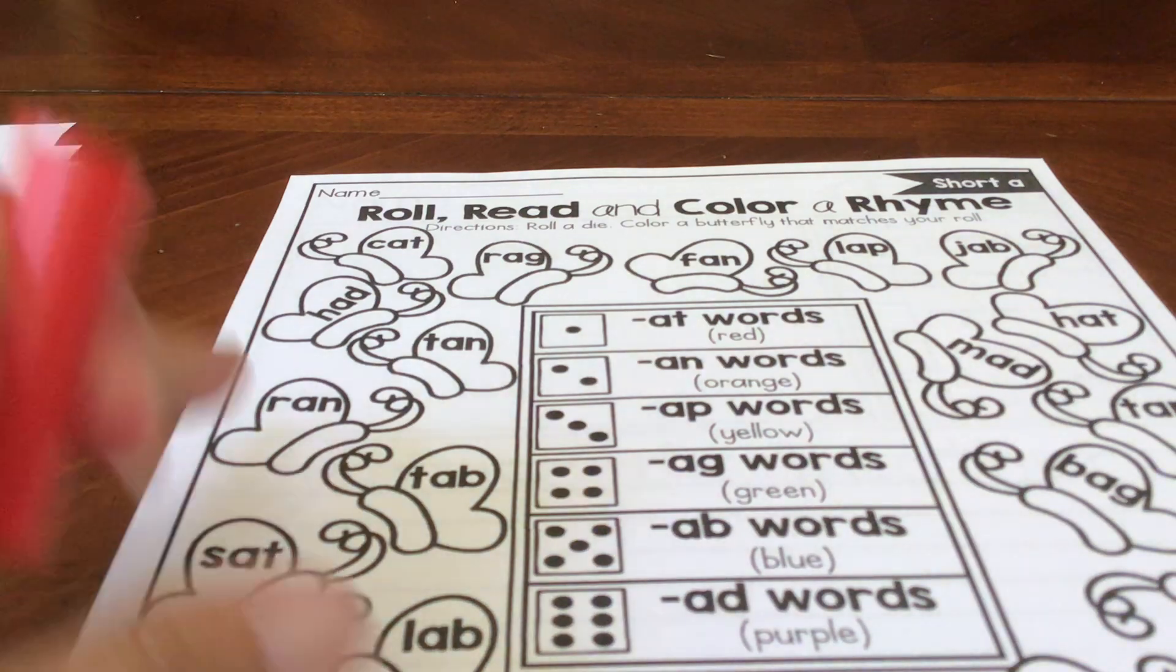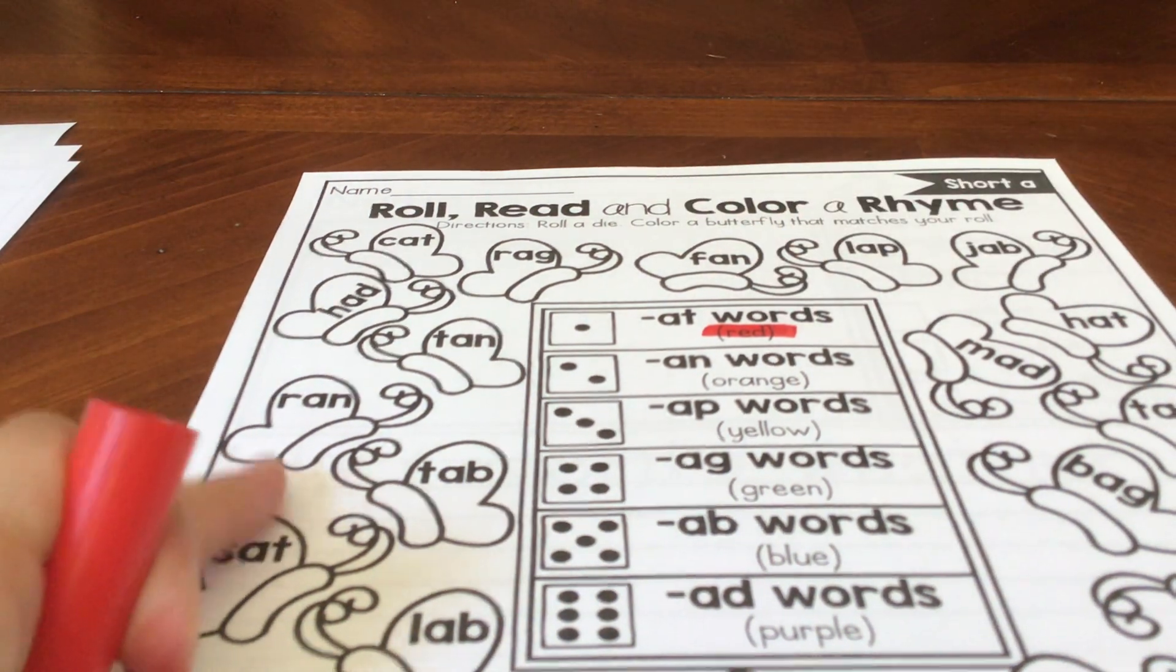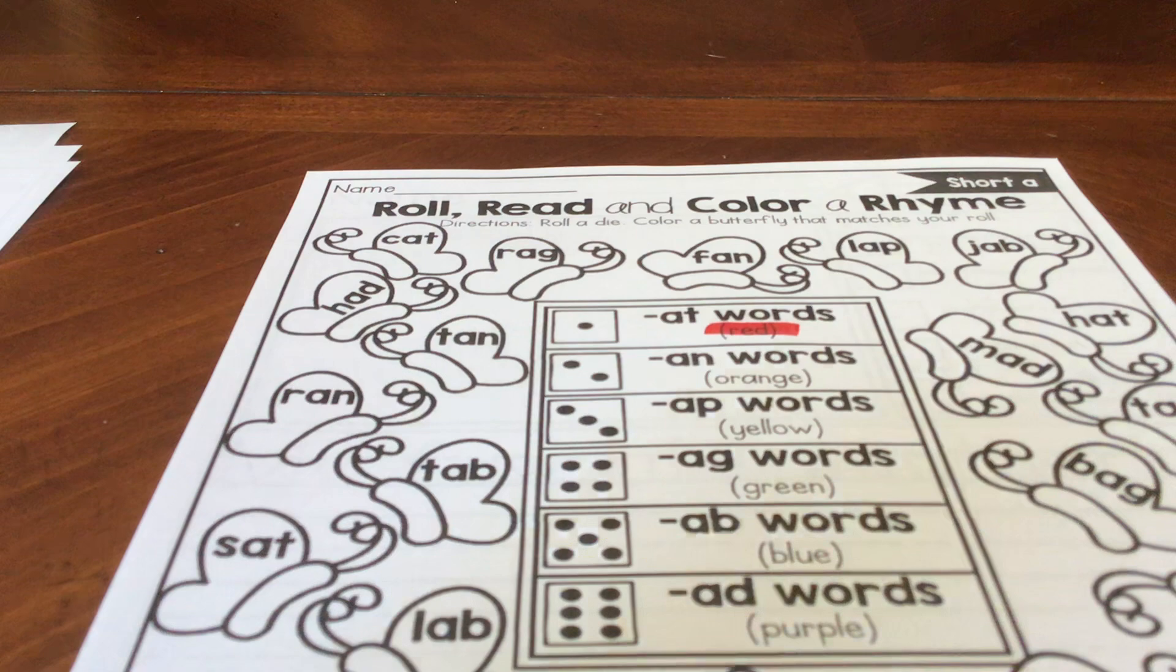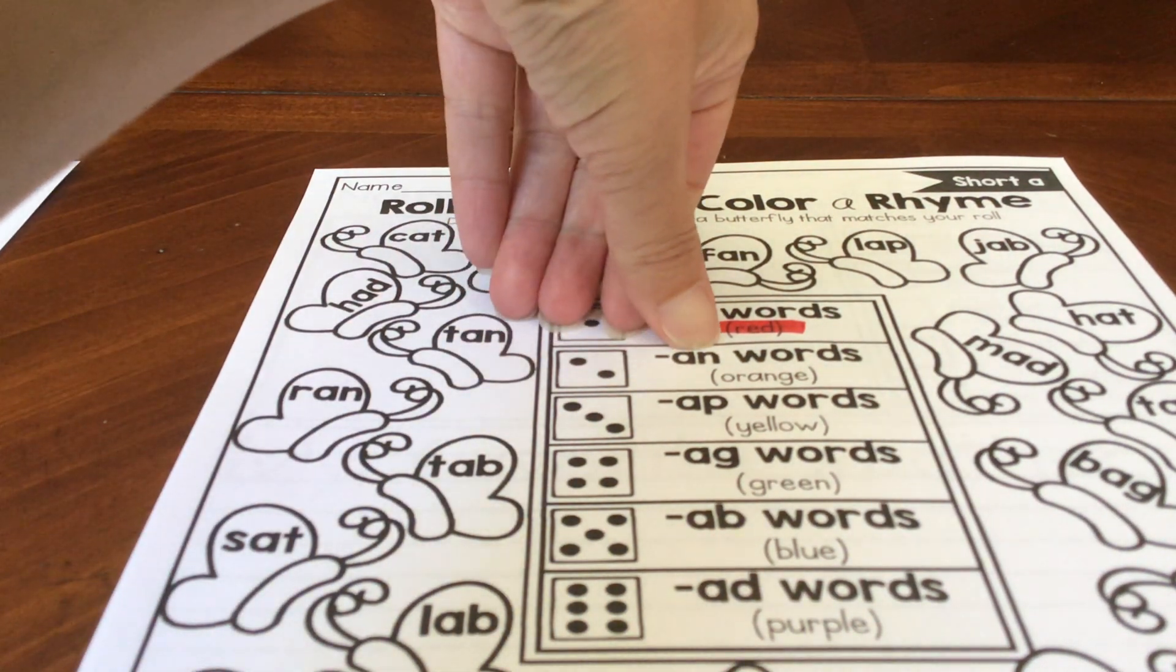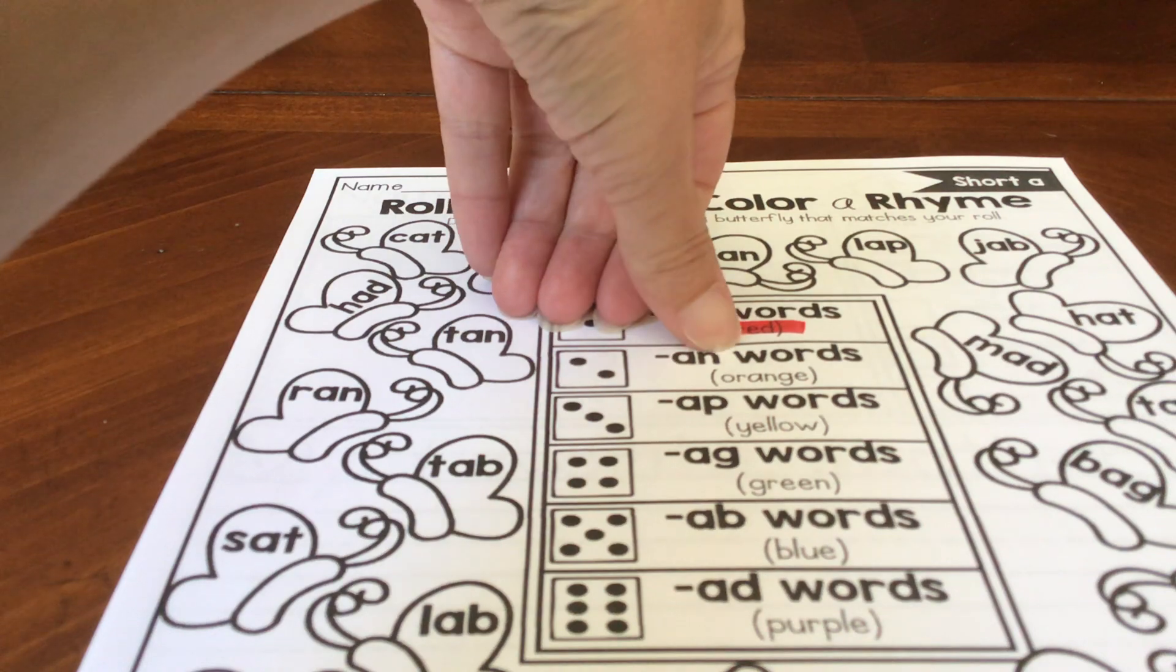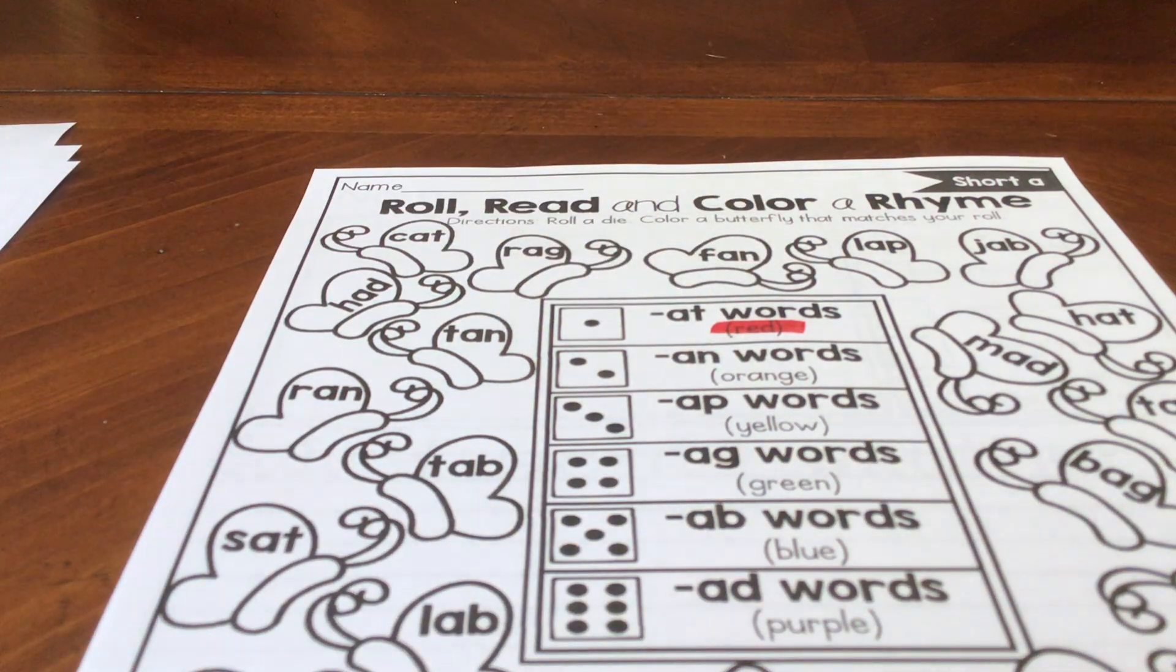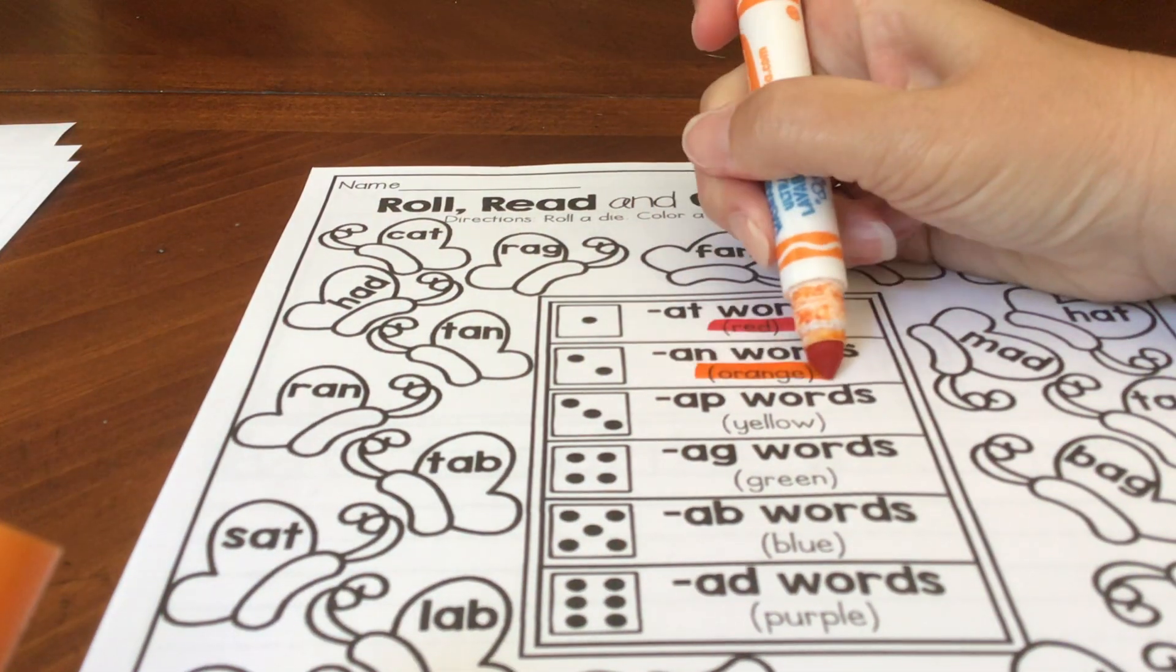At. Any words that you see that say at, you're going to color them red. If you roll a number two, you're going to look for words that say an, or that rhyme with an, and you're going to color them orange.